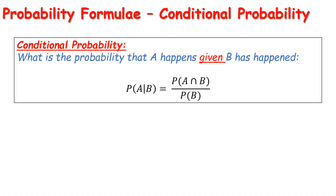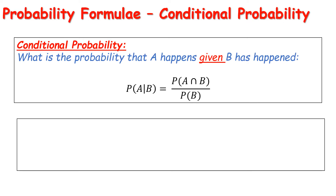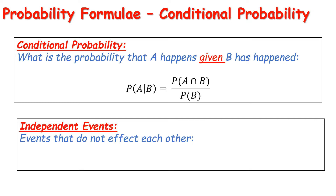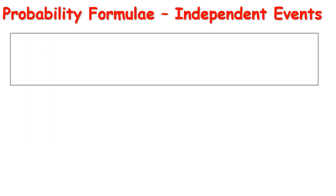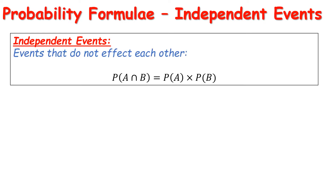The conditional probability formula is: P(A|B) equals the probability of A intersection B divided by the probability of B. If we extend this to independent events — events that don't affect each other — there is technically no conditional probability, because the probability that A happens given B has happened is just the same as the probability that A has happened. Using that substitution in the conditional probability formula gives us the independent events formula: P(A intersection B) equals P(A) multiplied by P(B). That is simply a rearranging of the conditional probability formula where A is not affected by B.